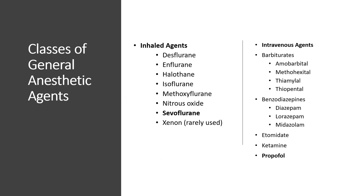There are two general classes of general anesthetics: inhaled agents and intravenous agents. The inhaled agents are administered by means of a breathing mask or tube connected to an anesthesia machine. The most commonly used inhaled agents are desflurane, enflurane, halothane, isoflurane, methoxyflurane, nitrous oxide, and sevoflurane. Xenon may be used but is very rarely used.